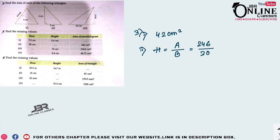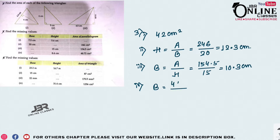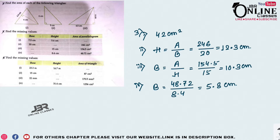246 ÷ 20 = 12.3 cm as the height. Number 3: find the base — base = area ÷ height = 154.5 ÷ 15 = 10.3 cm. Number 4: base = area ÷ height = 48.72 ÷ 8.4 = 5.8 cm.